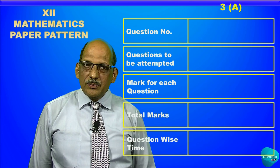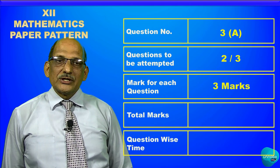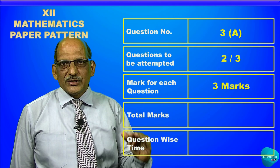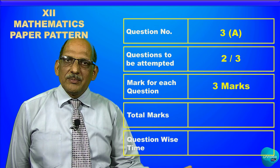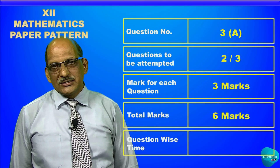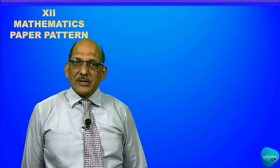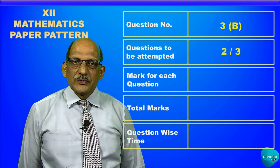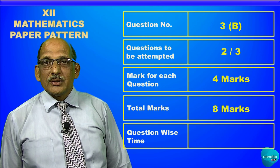In question number three, there are again two sub-questions A and B. In 3A, you have to solve two out of three questions, and each question carries three marks — exactly like question number two. Question number 3A total marks are six marks and you have to complete it in 12 minutes. In question number 3B, you also have to solve two out of three, each question of four marks.